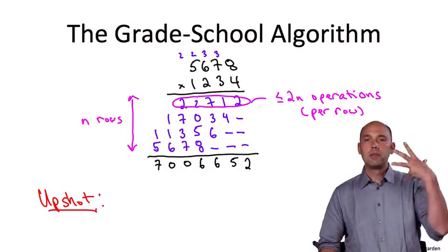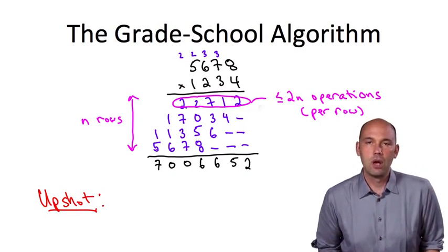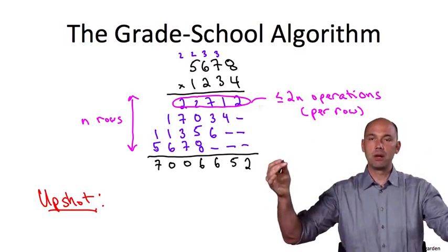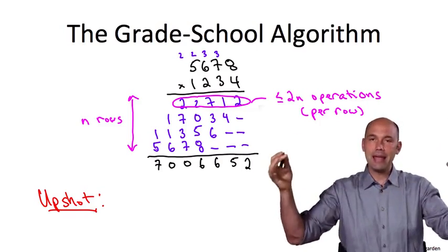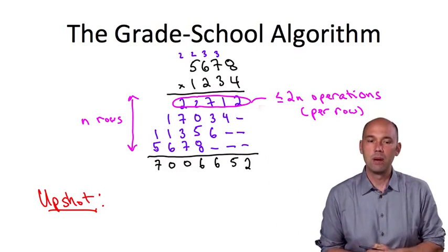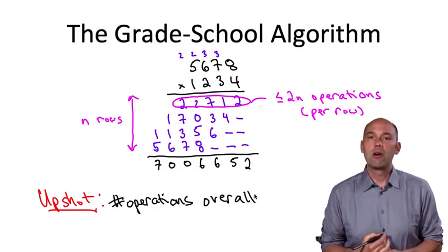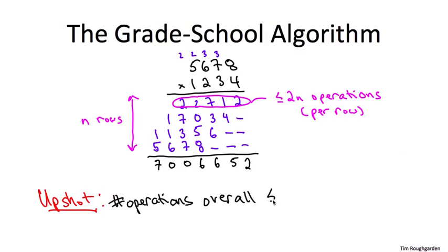So the upshot, the high level point that I want you to focus on is that as we think about the input numbers getting bigger and bigger, that is, as a function of n, the number of digits in the input numbers, the number of operations that the grade school multiplication algorithm performs grows like some constant, roughly 4, times n squared. That is, it's quadratic in the input length n.